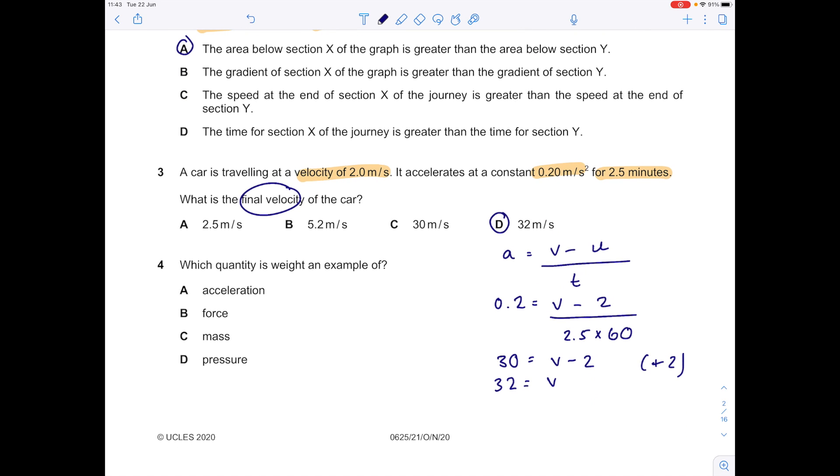What quantity is weight an example of? Well, remember the unit of weight is newtons, which matches the unit of force, which is also newtons, so the answer here is B. Acceleration, remember, is meters per second squared. Mass is in kilograms and one of the pressure units is pascals.